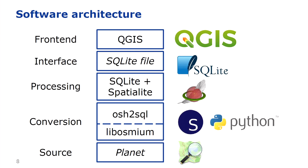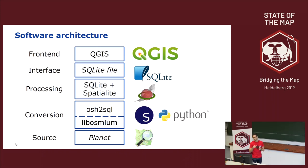We use an open source software architecture. The history of nodes is extracted from the full history planet file. It is converted into an SQLite database with a SpatiaLite extension using a custom Python script called OSH to SQL, based on the OSM library. We then aggregate the nodes to the cells of the grid and use QGIS to process the results — in particular, we use the hotspot analysis plugin to compute the spatial association.